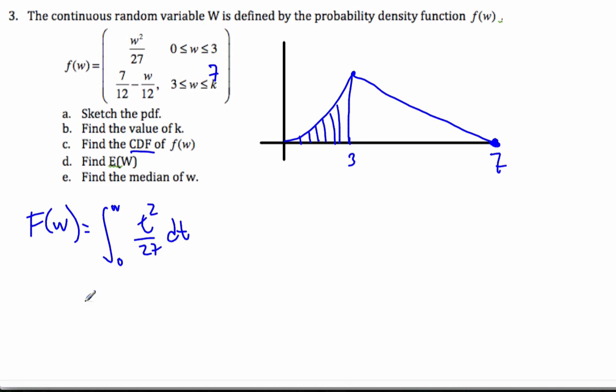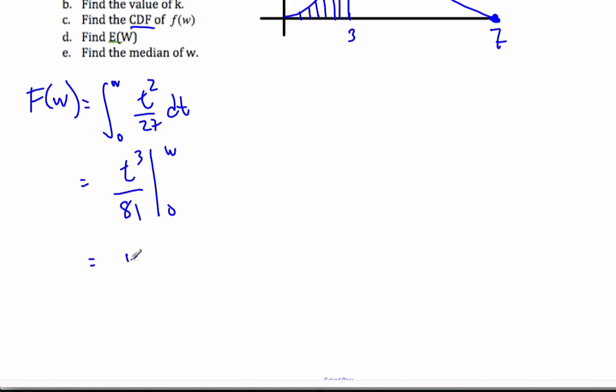So t squared over 27 dt. When I take the integral of this, I get t cubed over 81. I'm going to take that from 0 to W. I plug my values in and I get W cubed over 81 minus 0. So the beginning of my CDF function, F(W), is going to be piecewise. The first part is W cubed over 81, and that's going to go from 0 less than or equal to W less than or equal to 3. That's the first part.